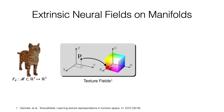The surface point is identified with its x, y, z coordinates for a specific embedding of the shape into 3D space. The x, y, z coordinates are then passed through an MLP, which returns the RGB color of that point. This can work well, as we see from the very good results in the texture fields paper.